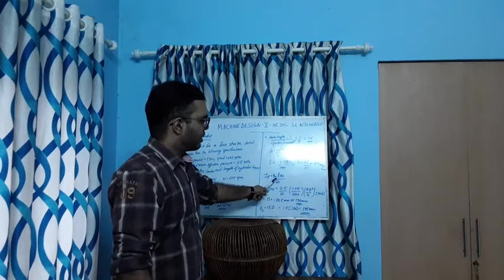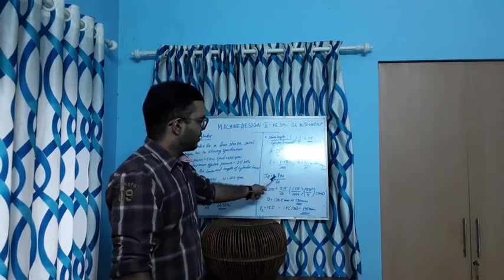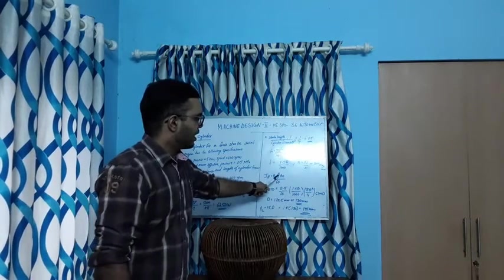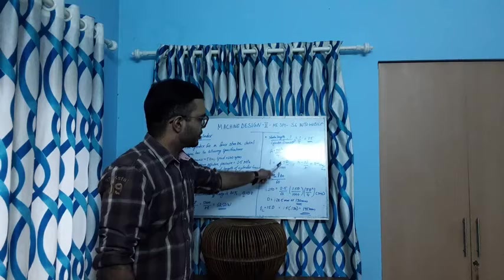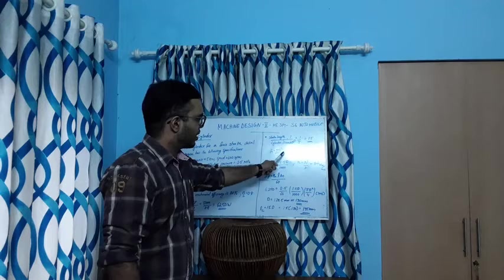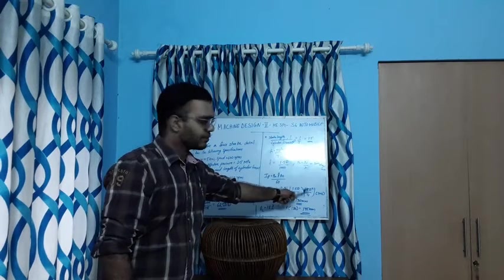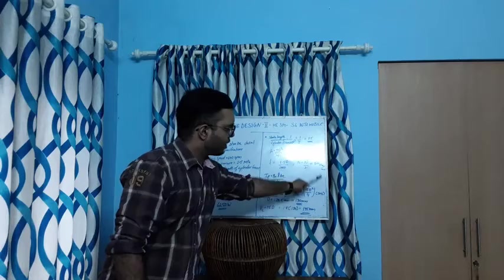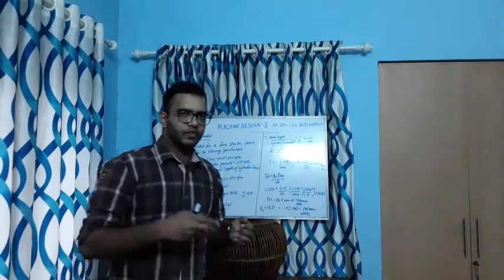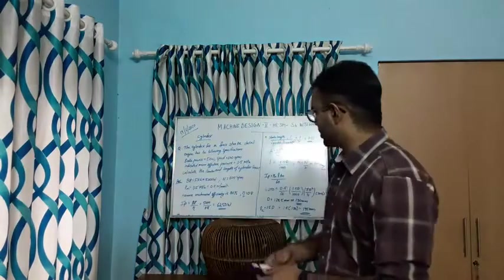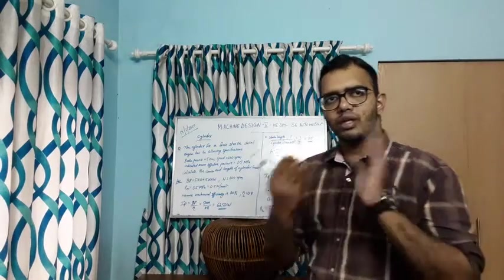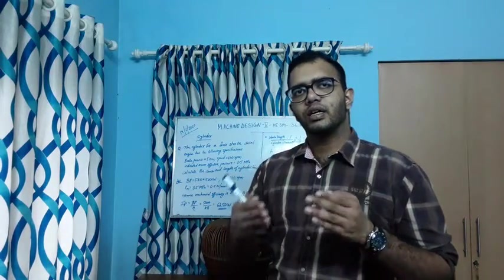The equation for indicated power is: IP equals Pm × L × A × n divided by 60. Here Pm is 0.5, L is 1.5D, A is pi D² by 4, and n is 300. By substituting all these values, we solve for D and get the diameter of the cylinder as approximately 128.5 mm, which we round to 130 mm.